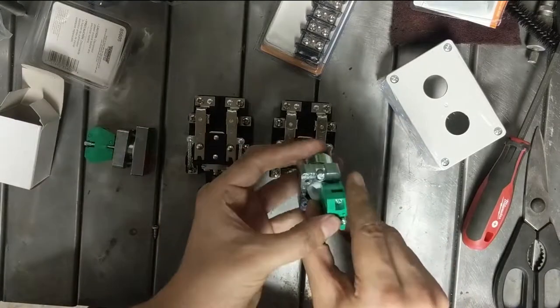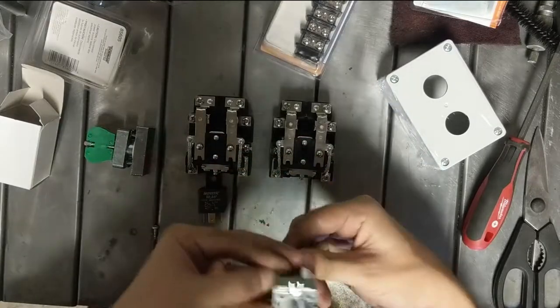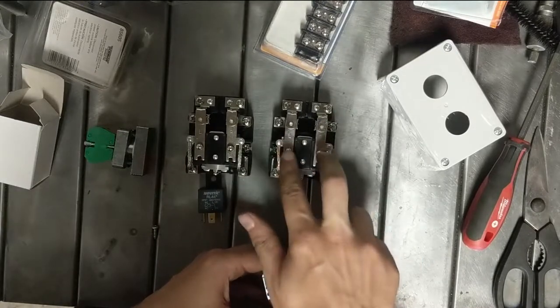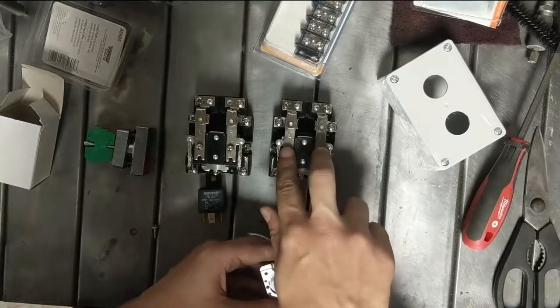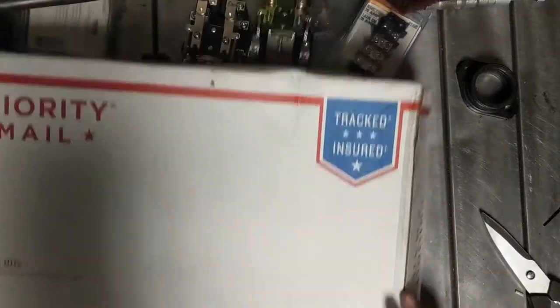We need one more thing here - we've got another cam operated contact. This cam's in here and in one position this is made up and in another position it isn't. So that's going to let me select which phase I'm connecting the starting coil to, forward or reverse. Let's go over the circuit diagram for this.